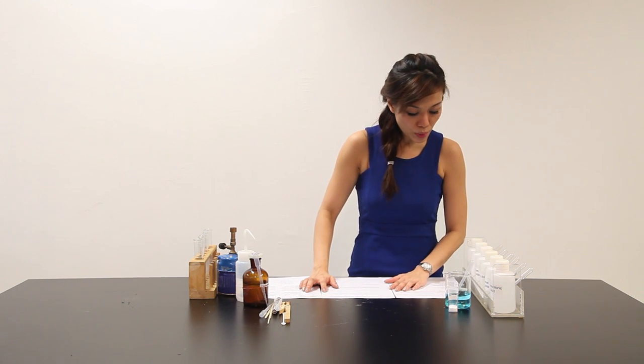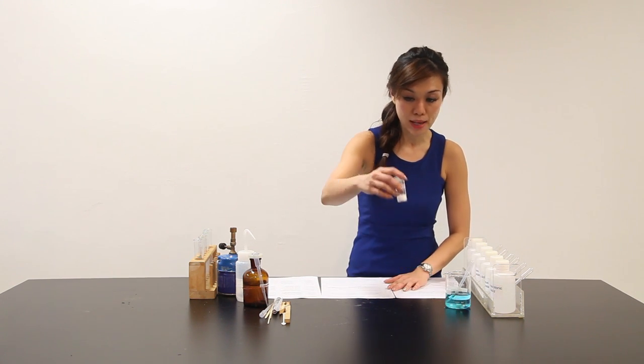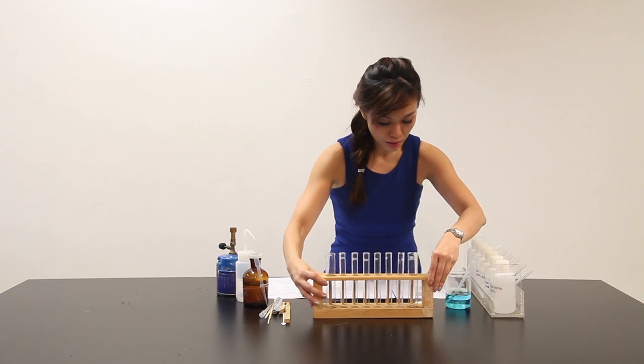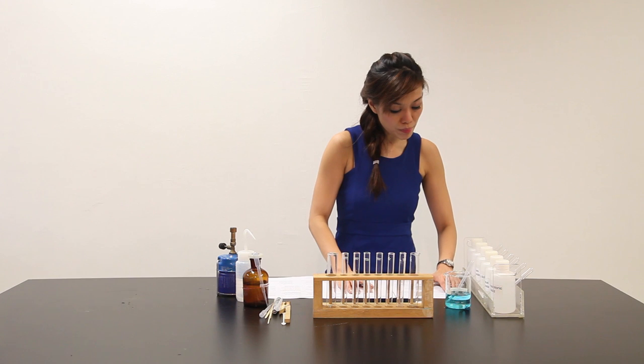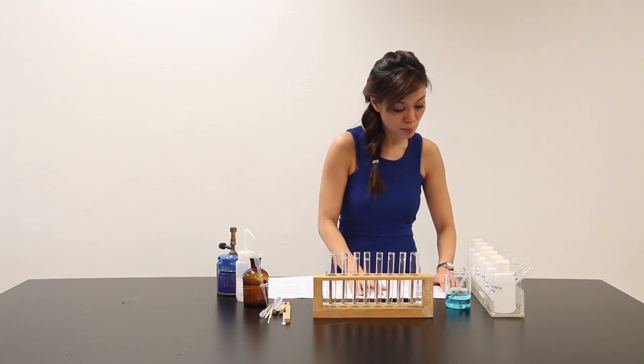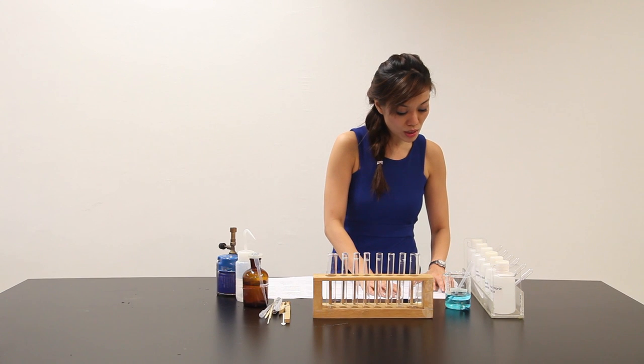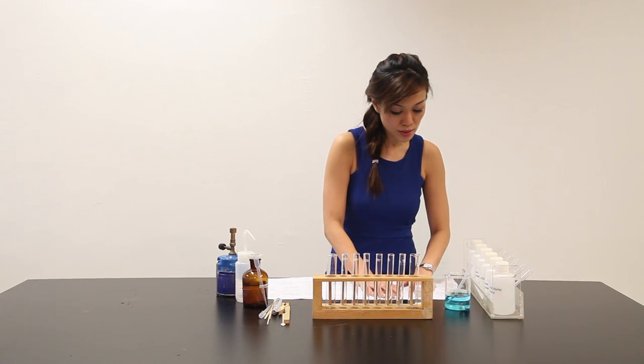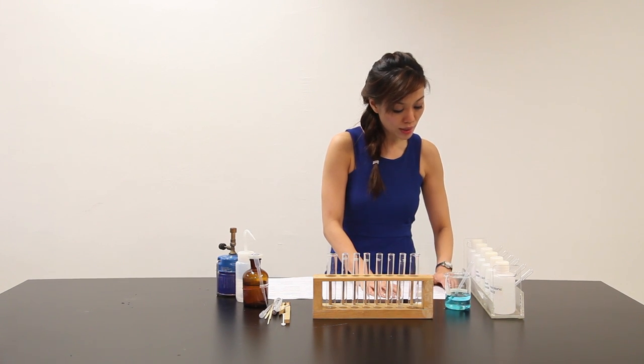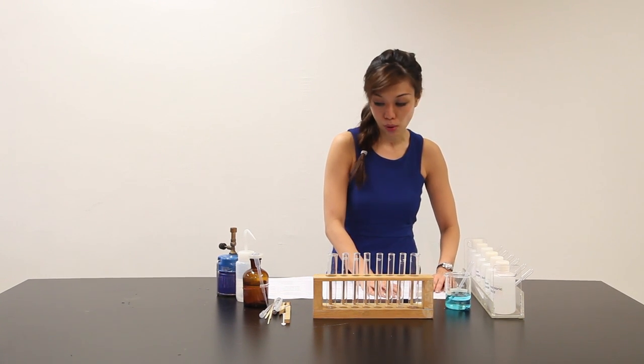The question says you are provided with a sample of solid X. This is sample solid X. So I'm going to put all my tests here right in front of me. The volumes given below unless referring to drops of solution are approximate and should be estimated rather than measured. Using the smaller tip of a spatula, transfer two spatula tips full, about 0.5 gram of solid X into a large dry hard glass boiling tube.